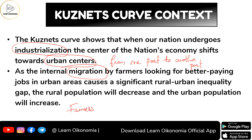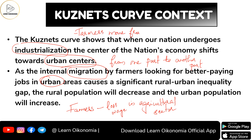Why are they moving? Because if they are working in the agriculture sector, they will be getting less wages. Since they are having less wage in the agriculture sector, they would be looking for better-paying jobs. As a result of industrialization, they could see that industries would be giving them better wages. Since these industries are mostly located in urban areas, these people will be moving from rural to urban areas — that is, farmers move from rural to urban areas. This leads to a rural-urban inequality gap.